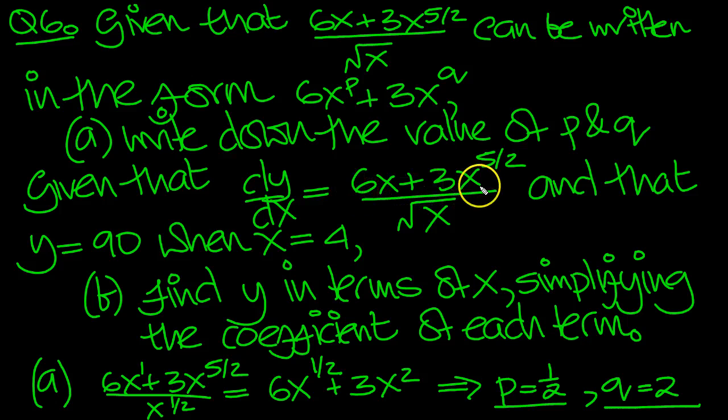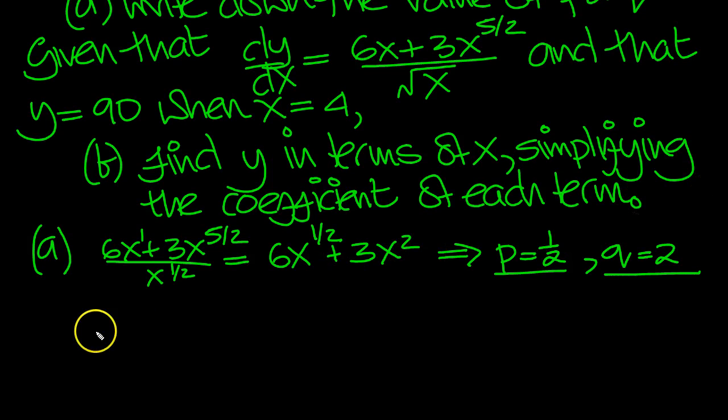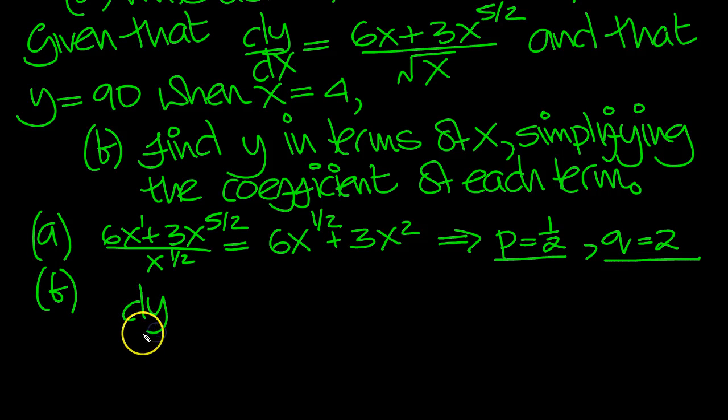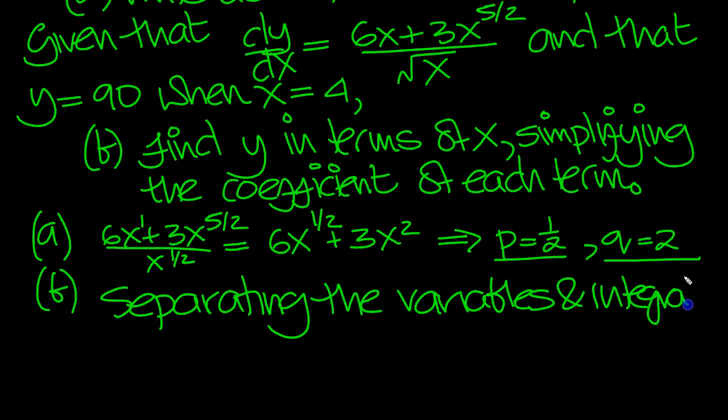So given that dy/dx equals this, and that y equals 90 when x is 4, find y in terms of x. So let's do part b now. So let's have a look at this part of the problem then. So dy/dx. So let's separate the variables and integrate straight away. So separating the variables and integrating gives.